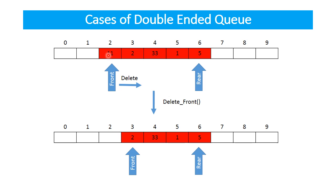And before incrementing the front variable, store the element — for example 11 — in some temporary variable so that you can print or return which element is actually deleted.